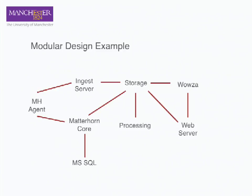It's kind of the same with the capture agent — the box you install in the theatre that does the recordings. Matterhorn has software that will turn a generic PC into a capture agent. We've chosen not to use that. From the stands outside, there are lots of vendors such as NCAST who make a Matterhorn-compatible box you can buy off the shelf. There's also Epiphan, and Galicaster — which I'm a huge fan of and is what we're using in our deployment. There are many others, including vended solutions for the capture agent, just as there are vended solutions for the database. You can replace different elements and customize Matterhorn to the needs of your institution.